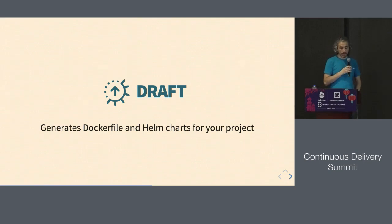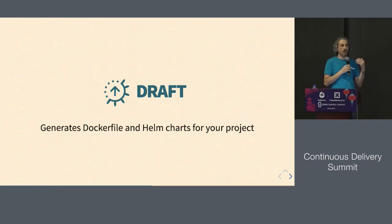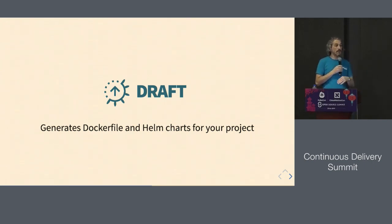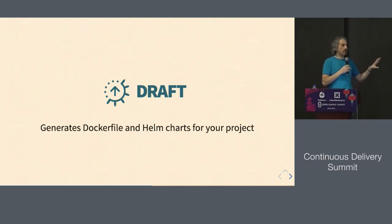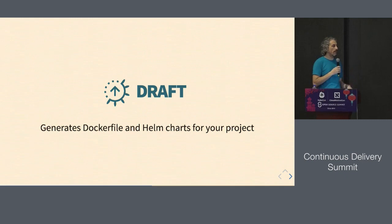Draft is a project that generates a Dockerfile and Helm chart. If you are importing a project into Jenkins X and you don't have a Dockerfile or Helm chart — if you only have your application code — Draft will generate all that for you. You can customize it, of course. It basically allows you to move an application into this world of Kubernetes deployments and Kubernetes packages.